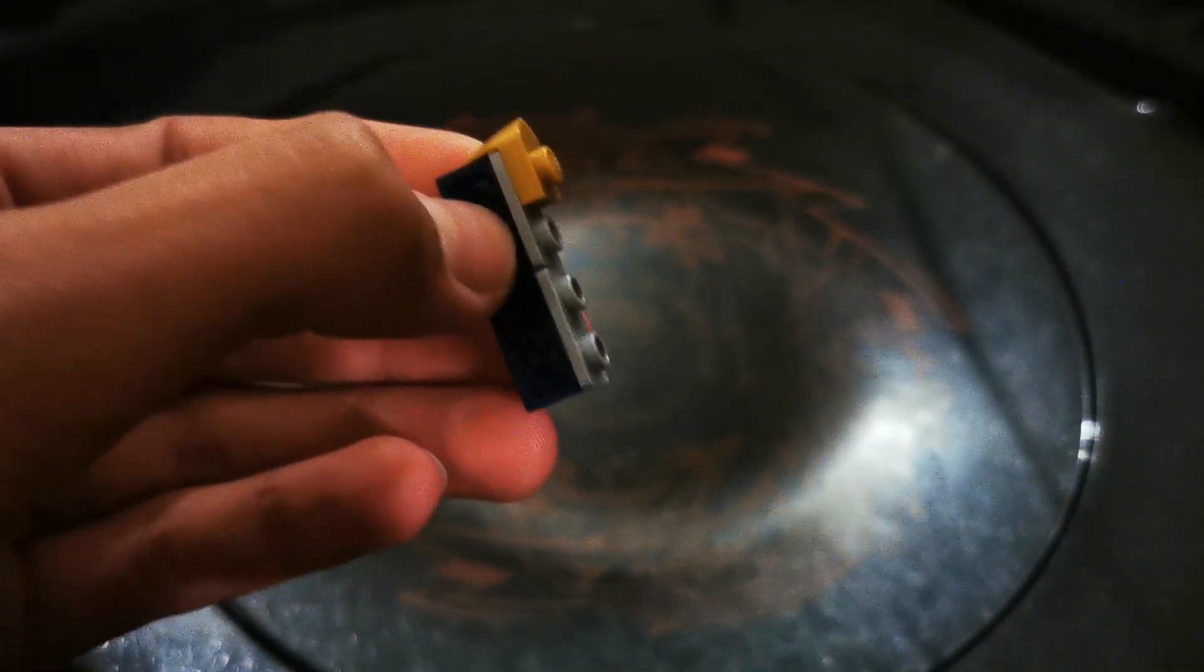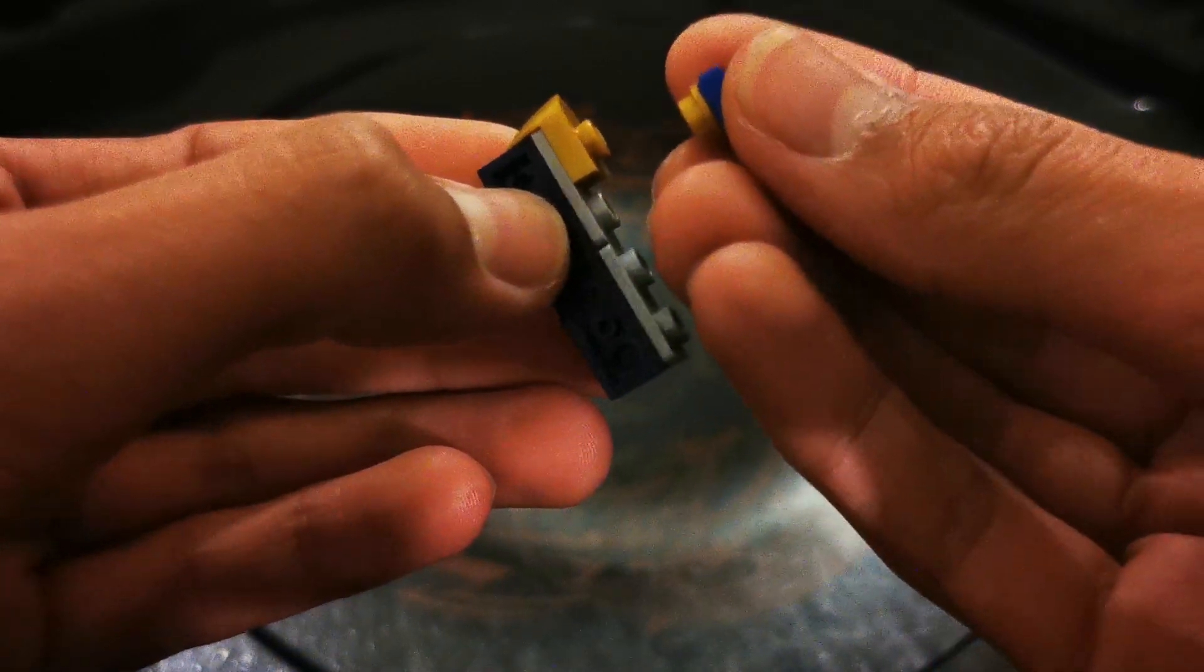Now grab this little claw piece in gold, and then attach a 1x1 stud in gold to a 1x1 flat tile in blue.